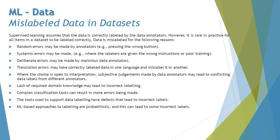Where choices are open to interpretation, subjective judgments by data annotators may lead to conflicting labels from different annotators. Lack of required domain knowledge may lead to incorrect labeling — similar to a fundamental testing principle that without proper knowledge of what you're doing, errors are more likely. Complex classification tasks where categories are very close to each other can also result in more errors, as it becomes difficult to decide which class an item belongs to.